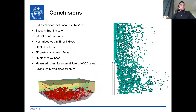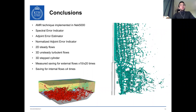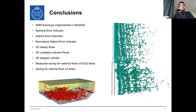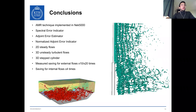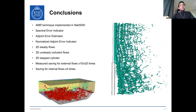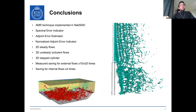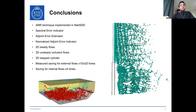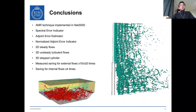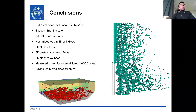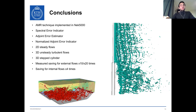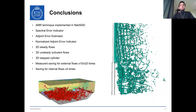To sum up, today I introduced the AMR implementation in NEC5000, the SPECT error indicator and adjoint error estimator, showing the comparison between these two different error-driven approaches, and the new normalized adjoint error indicator — from 2D steady flows up to 3D unsteady turbulent flows like the periodic hill and the 3D step cylinder. The computational saving observed is around 10 to 20 times for external flows, and around 2 to 4 times for internal flows like the periodic hill or straight and bent pipes. Thanks a lot for your attention, and I'm available if you have any questions.